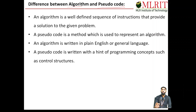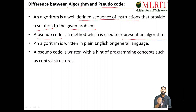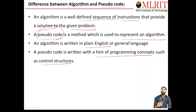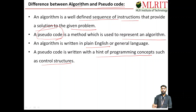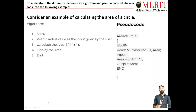What is the difference between algorithm and pseudo code? An algorithm is a well-defined sequence of instructions that provides a solution to a given problem. A pseudo code is a method used to represent an algorithm — first we write the algorithm, then from that algorithm we write the pseudo code. The algorithm is written in plain English or any general language, while pseudo code is written with hints of programming concepts such as control structures, specifying variable names and conditions.